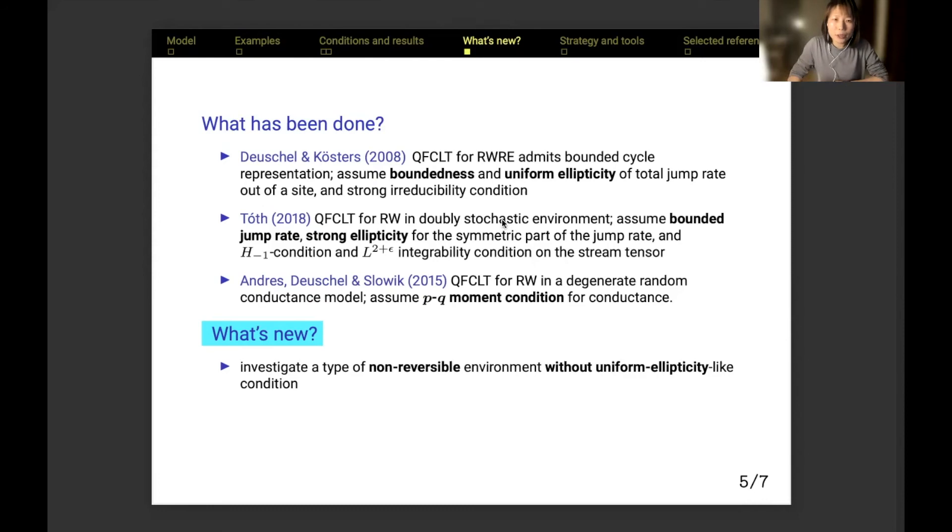Bounded cycle representation has been previously introduced by Deuschel and Kösters in 2008. They assume boundedness and uniform ellipticity of total jump rates at all sites and a strong irreducibility condition. For QFCLT in a more general doubly stochastic environment, Toth's paper in 2008 assumed upper bound for the jump rate, strong ellipticity for the symmetric rate, as well as two other conditions on the stream tensor associated with the anti-symmetric rate. Strong ellipticity, or equivalently boundedness and uniform ellipticity, has been lifted in a paper by Andres, Deuschel, and Slowik in 2015 for random conductance model. They assumed the previously introduced p-q moment conditions.